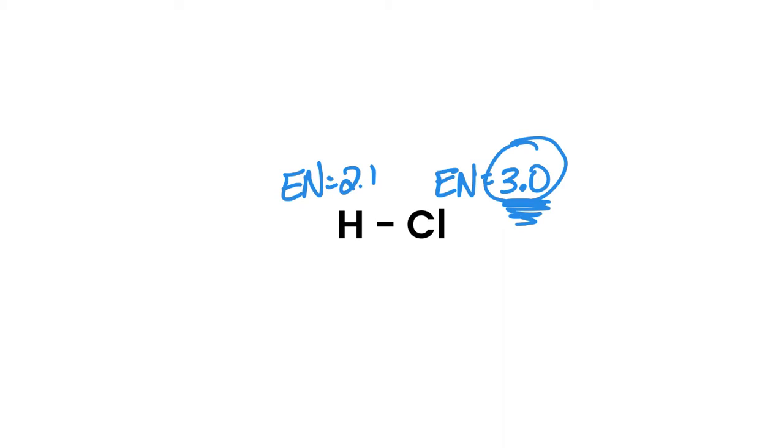So we can represent this on our bond in a couple of different ways. Now, if this electron pair wants to spend a bit more time around the chlorine than it does the hydrogen, what that means is that's going to result in a partial negative charge on the chlorine. It is not a full charge, because we're not getting a transfer of electrons here from one to the other. But instead, it's a partial charge.